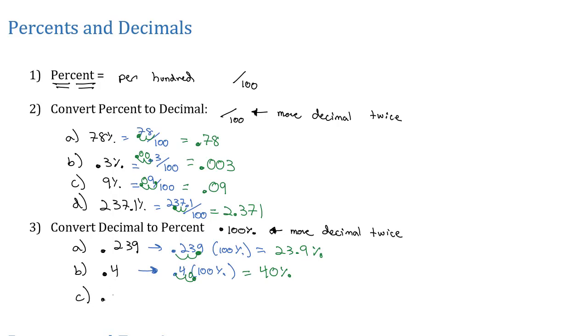One more. What if I've got 0.0004? To make that a percent, we take 0.0004 and multiply by 100%. Multiplying by 100 moves the decimal point twice, so we get 0.04% is equal to the decimal 0.0004.